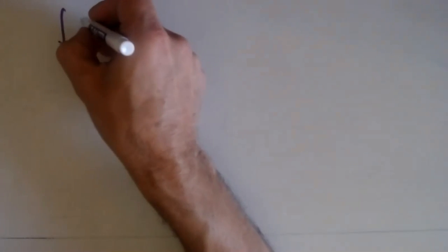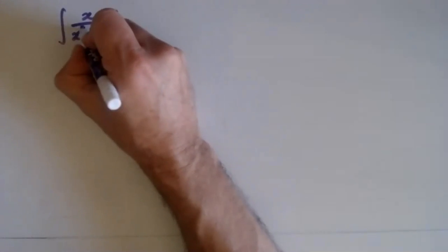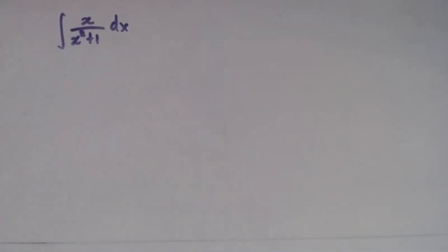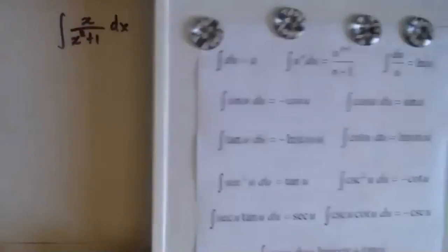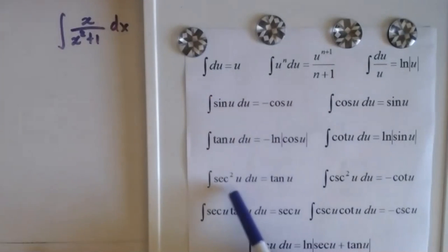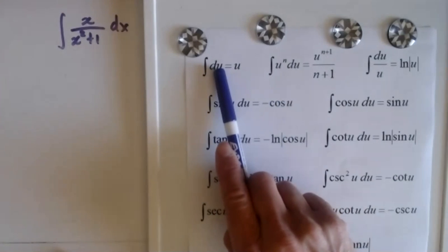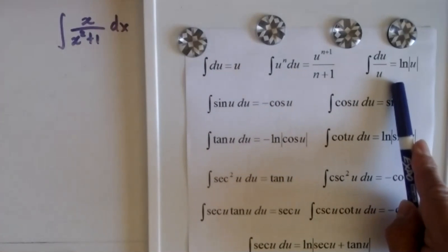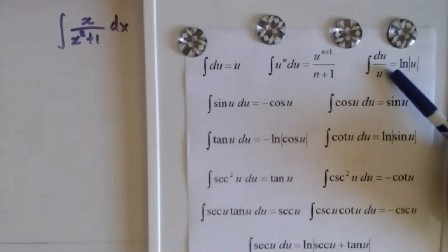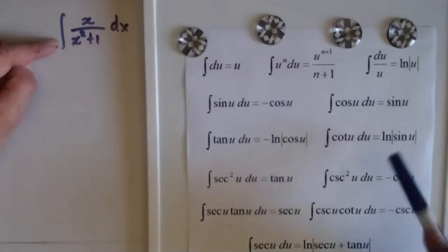Let's begin with this integral: x over x squared plus 1 dx. We have formulas we know for integration. In previous classes we covered the integral of cosine, secant squared, cosecant squared, secant tangent, and then the integral of the constant, the power rule. The only one that is new is the integral of the natural log. When you have a problem like this, you have to check which formula it looks like.